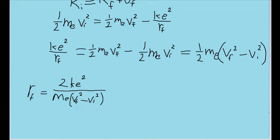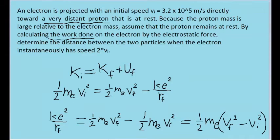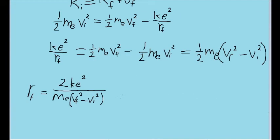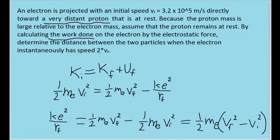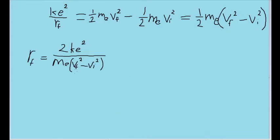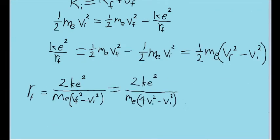And this is what we end up with. We don't have the value of the final speed, but we do know that it's equal to twice the initial speed — at least that's what we're trying to find. So let's substitute 2 times v initial for v final. That part comes out as 4 times v initial squared minus v initial squared, since 2 squared is 4. We can subtract one of these v initial squared terms, and it becomes 3 v initial squared.